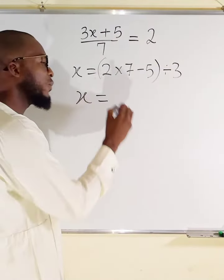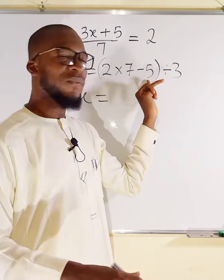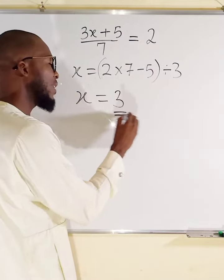We simplify to get the value of x. 2 multiplied by 7 is 14. 14 minus 5 is 9. 9 divided by 3 is equal to 3. Can you see that?